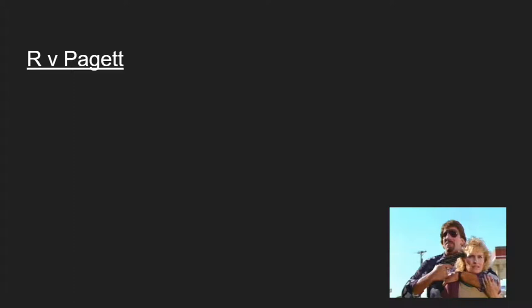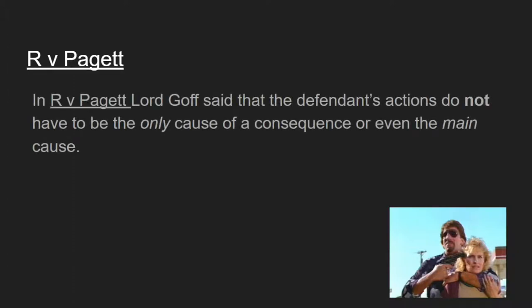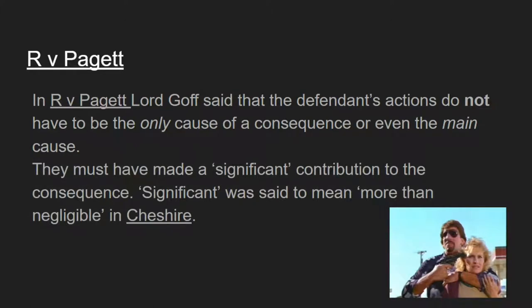In R v Padgett, Mr Padgett held his girlfriend hostage, the police were involved, he fired shots at the police and they fired back and killed his girlfriend who he was using as a human shield. His argument was that he didn't shoot Gail — it was the police that shot her. Lord Gough said that the defendant's actions don't have to be the only cause or even the main cause of the consequence. They just have to have made a significant contribution — with significant meaning more than negligible or more than minimal. Clearly his actions in using her as a human shield had a more than minimal contribution to the result, and so he was found to have been a legal cause of what happened.